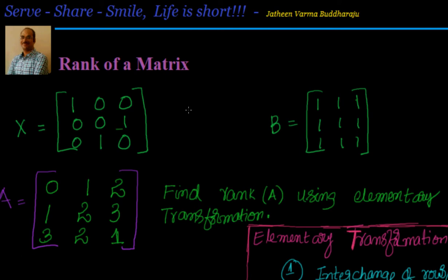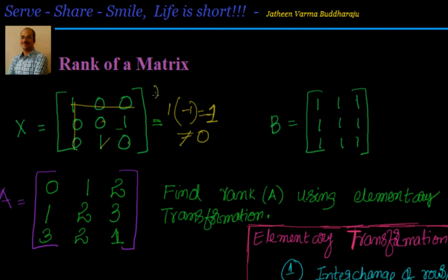Let's look at this first example. Matrix X is given as [1 0 0 / 0 1 0 / 1 0 1]. I need to find the determinant. If it's not equal to 0, the rank is 3. Expanding along the first row, first column — since the remaining elements are 0 — I get 1 into (0 minus 1), which equals minus 1. Since minus 1 is not equal to 0, the rank of X is equal to 3.